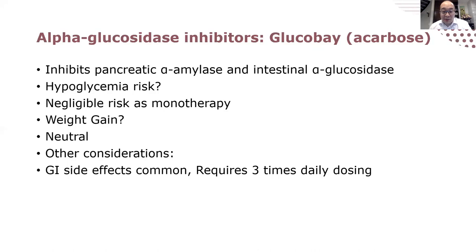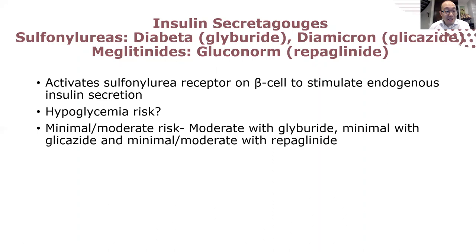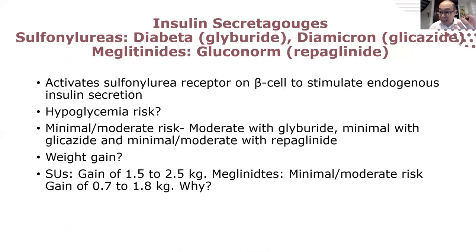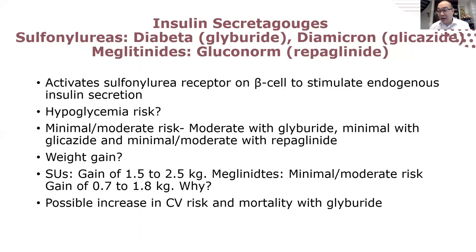Insulin secretagogues activate the receptor on beta cells in the pancreas and force them to secrete insulin. Because they force insulin secretion, there is some risk of hypoglycemia — less with gliclazide and repaglinide, but moderate with glyburide. There is some weight gain because stimulating insulin secretion means more of an anabolic effect. There is also a possible increase in severe risk and mortality with glyburide. Generally in Alberta, I need to use these medications first before I can get newer medications covered.